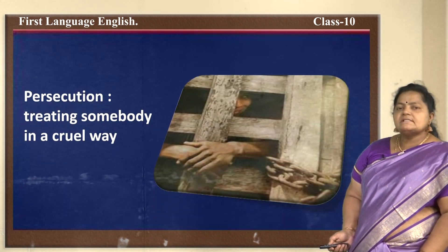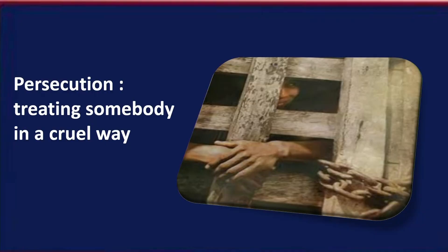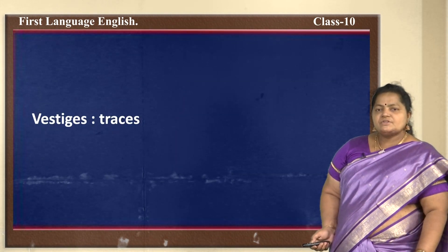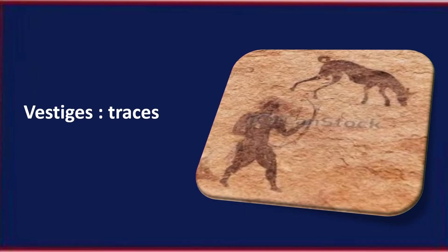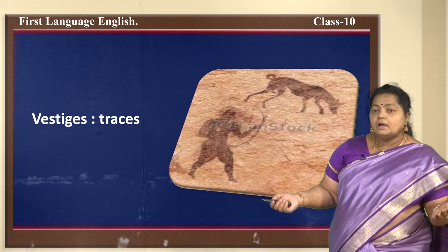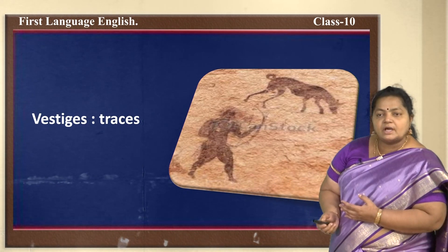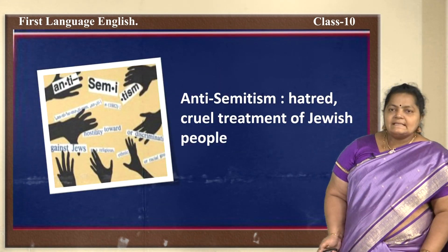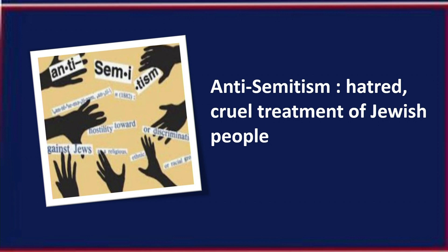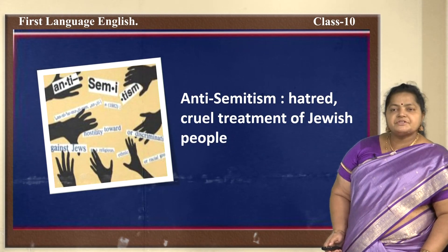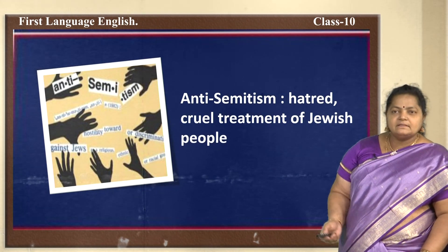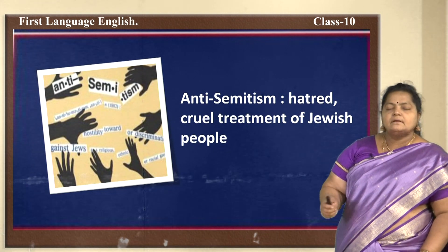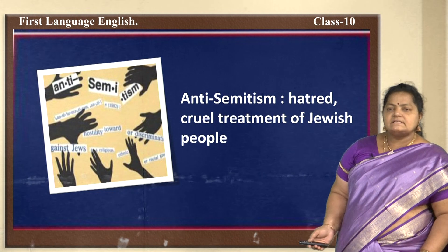'Persecution' — treating somebody in a cruel way; being ill-treated. 'Vestiges' — traces; from the olden days, seeing only the traces left behind, we come to know how people lived. 'Anti-Semitism' — hatred or cruel treatment of Jewish people. The way Jewish people were ill-treated by the Nazi Party and Hitler is called anti-Semitism.